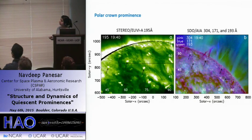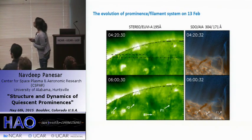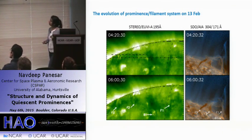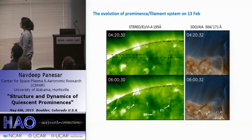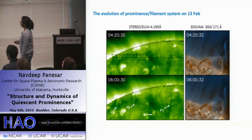From SDO images we removed the average coronal background to enhance visibility of prominence plasma and coronal cavity. This is the zoom-in view of the prominence-filament system — STEREO on the left and a two-color SDO image on the right, where brown is 304 and blue is 171. With this combination we can see the connection through the corona. From STEREO images we mainly identified three prominence pillars: F1, F2, and F3. Between prominence pillars F1 and F2, we noticed a dark region which does not show any activity.